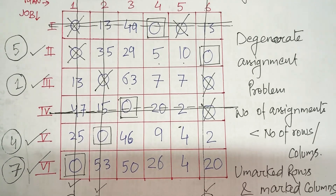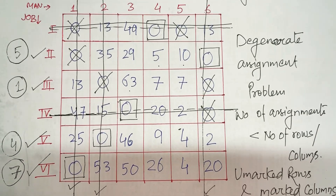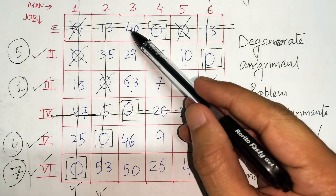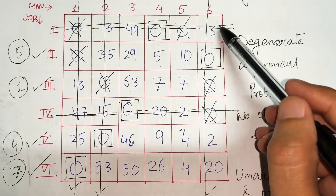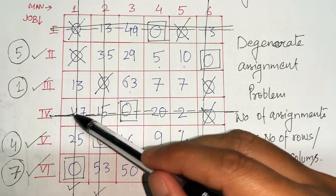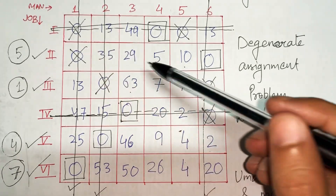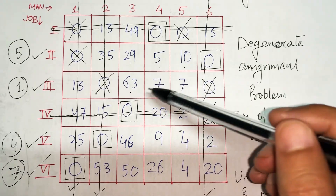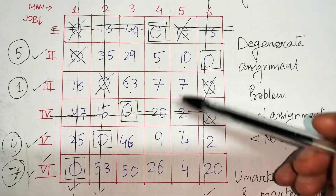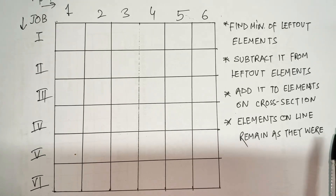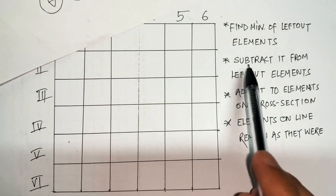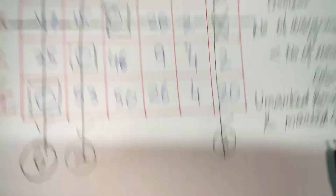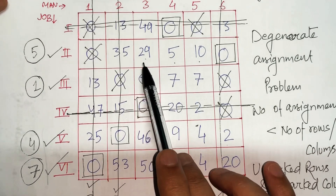Let's set some rules for the new table. There are three types of elements: some elements are on-line (like 49, 0), some are on cross-sections (like 3, 0, 15, 47), and some are neither — these are called left-out elements. The rules are: find the minimum of the left-out elements — which I've already found to be 4 — then subtract it from the left-out elements. So 29 in the new table will appear as 25.